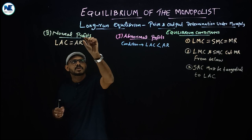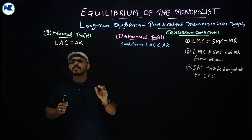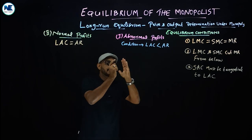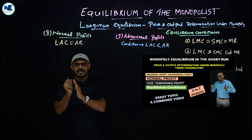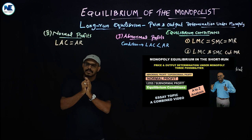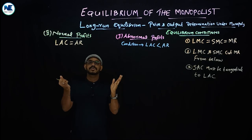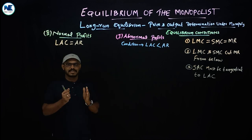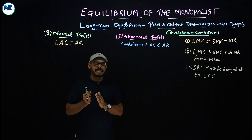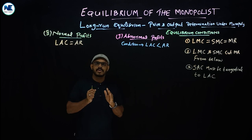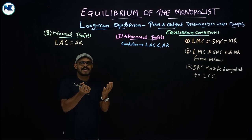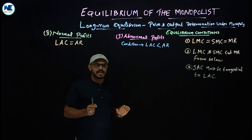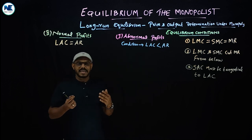Today's video is related to long-run equilibrium of the monopolist — another very important session. Previous videos discussed short-run equilibrium of the monopolist and perfect competition. I'm going to analyze the topic with diagrams and simple explanations. Please watch the previous videos first so you can easily follow this topic.